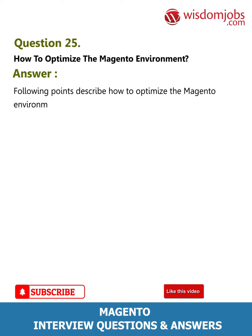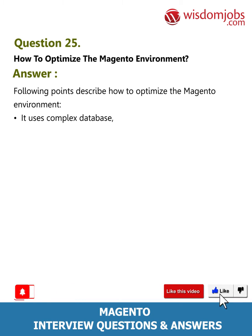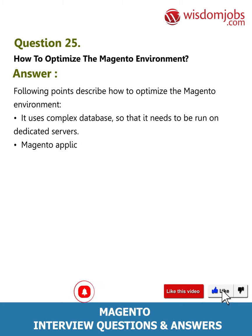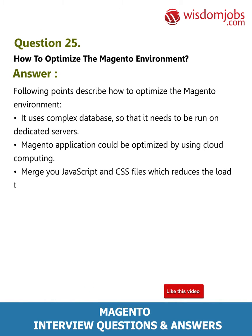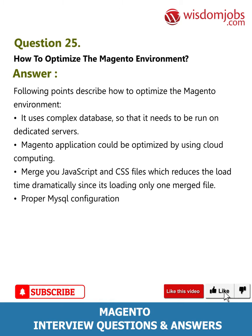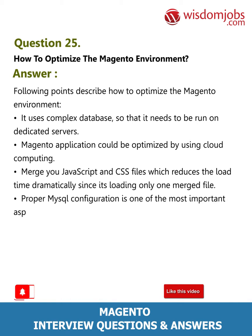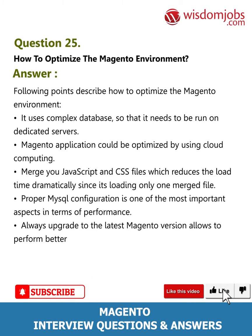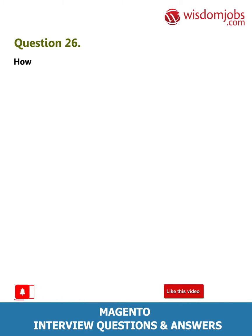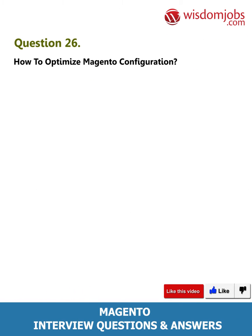Question 25: How to optimize the Magento environment? Answer: It uses a complex database, so it needs to be run on dedicated servers. The Magento application can be optimized by using cloud computing, merging JavaScript and CSS files to reduce load time, ensuring proper MySQL configuration, and always upgrading to the latest Magento version for better performance.